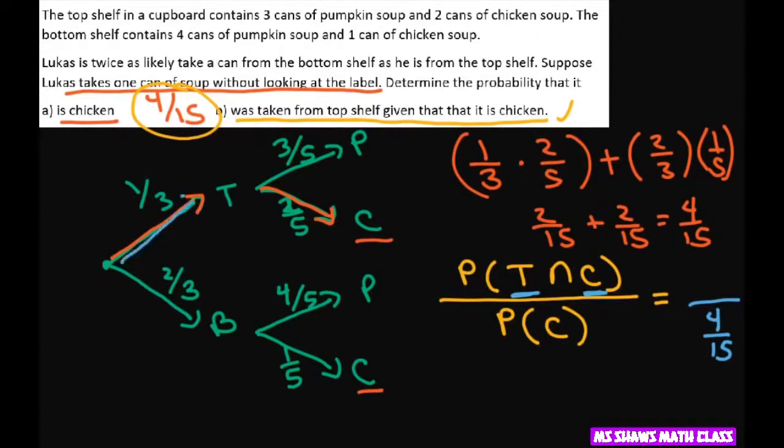is these two branches, so that's gonna be one-third times two-fifths. So that's gonna be two-fifteenths divided by four-fifteenths.